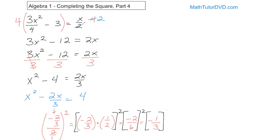We want to square negative 1 third. Negative 1 third squared means negative 1 third times negative 1 third — the negatives cancel, leaving 1 ninth. So 1 ninth is our magic number. This is what you add to the left and also add to the right at this step.